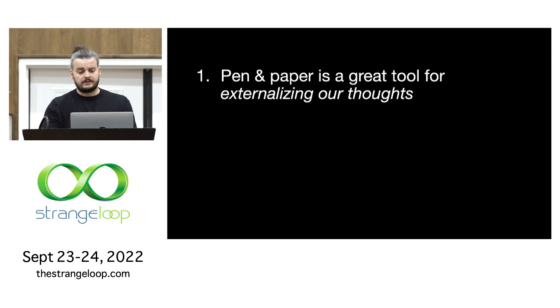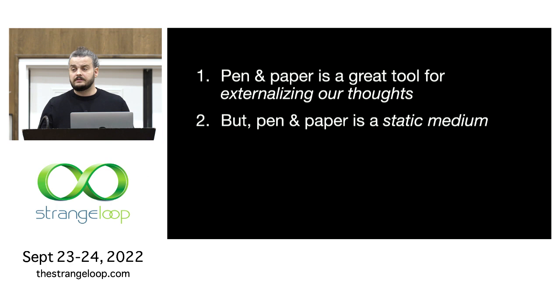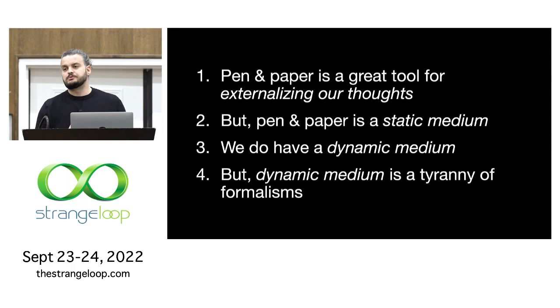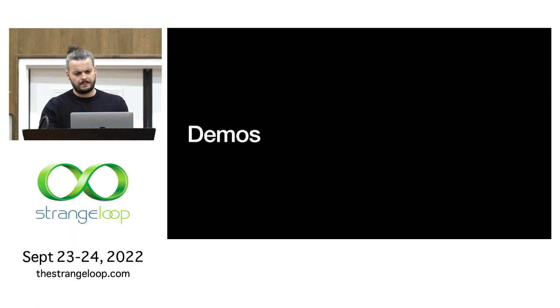So to quickly reiterate, first of all pen and paper is a great tool for externalizing our thoughts. We sketch to think about things. But pen and paper is also static. It can't respond to us in any way. We know how to make things that respond to us. We have the dynamic medium in some sense of that word, but the dynamic medium doesn't mesh well with sketching. It's formal. It forces specific precision levels. It makes you think about the tool, not about the problem. We want the flexibility and sketchiness of paper combined with the power of computation. We want programmable ink. So I think with this introduction we are now ready to go into some live demos of the prototypes that we built at the lab to explore the space and some of our ideas around how we could mesh these things together.